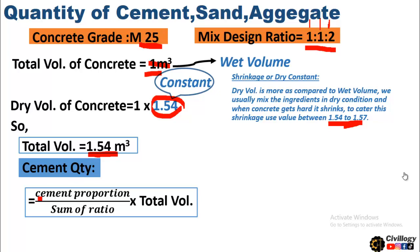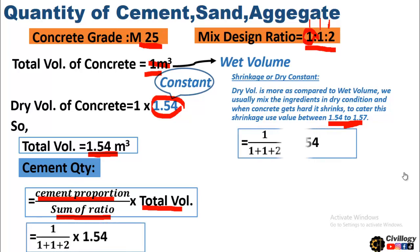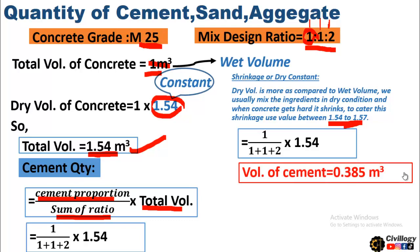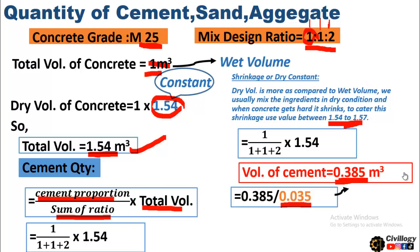To calculate the cement quantity, use this formula: cement proportion divided by sum of ratio, multiplied by total volume. The cement proportion is 1, and the sum of ratio is 1+1+2 = 4, multiplied by the total volume of 1.54 cubic meters. We get the volume of cement which comes out to be 0.385 cubic meters. To convert this into number of bags, divide by 0.035 — which is the volume of one cement bag — and we get 11 bags.